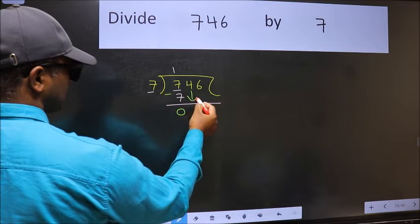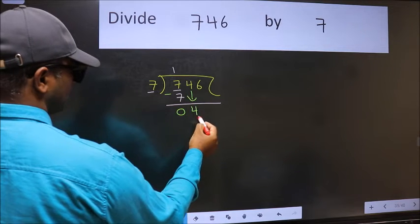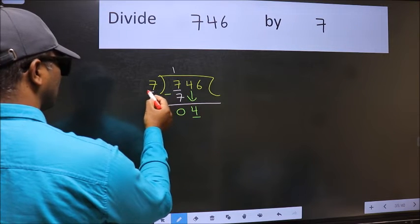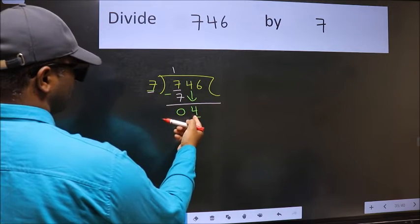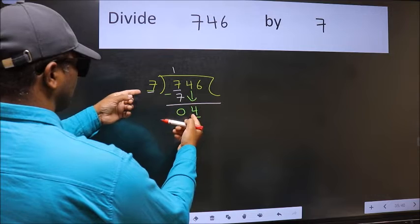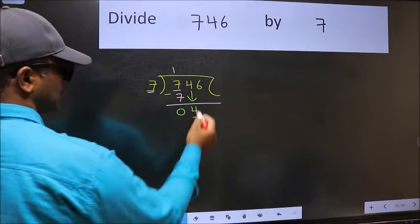After this, bring down the next number. So 4 down. Now here we have 4 and here 7. 4 is smaller than 7, so we should bring down the second number.